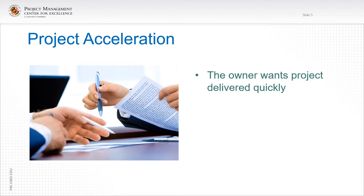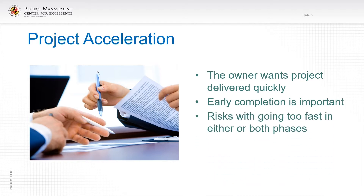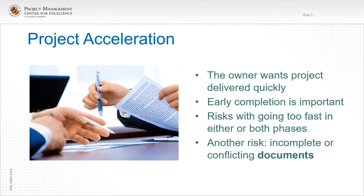Another item to cover is project acceleration. Sometimes you can go too quickly on a project. Obviously the owner wants a project delivered quickly — the owner wants early completion, which is very important not only to the owner, but also to the user who's going to occupy the facility. There are risks with going too fast in either or both phases — that is, in either the design phase or the construction phase. Another risk is incomplete or conflicting documents, which we will cover later in much more depth, for example in constructability.